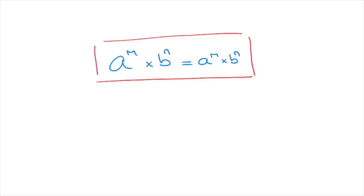Although this result seems simple, it is nonetheless very important. For example, if we were asked to simplify 2 times 3 to the power of 4, we notice that we have 3 raised to the power of 4, so the base here is 3, and here we have a 2. Although we don't write it, 2 on its own means 2 to the power of 1. So this rule tells us we cannot simplify this further — it simply equals 2 times 3 to the power of 4. We could calculate the actual value, but there is no rule allowing us to multiply base 2 with base 3.